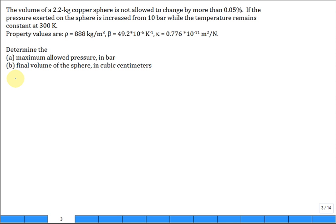A mass of copper, 2.2 kilograms, it's a sphere. The volume is not allowed to change by more than 0.05 percent. If the pressure on the sphere is increased from 10 bar while the temperature remains constant at 300 Kelvin, determine the maximum allowable pressure.